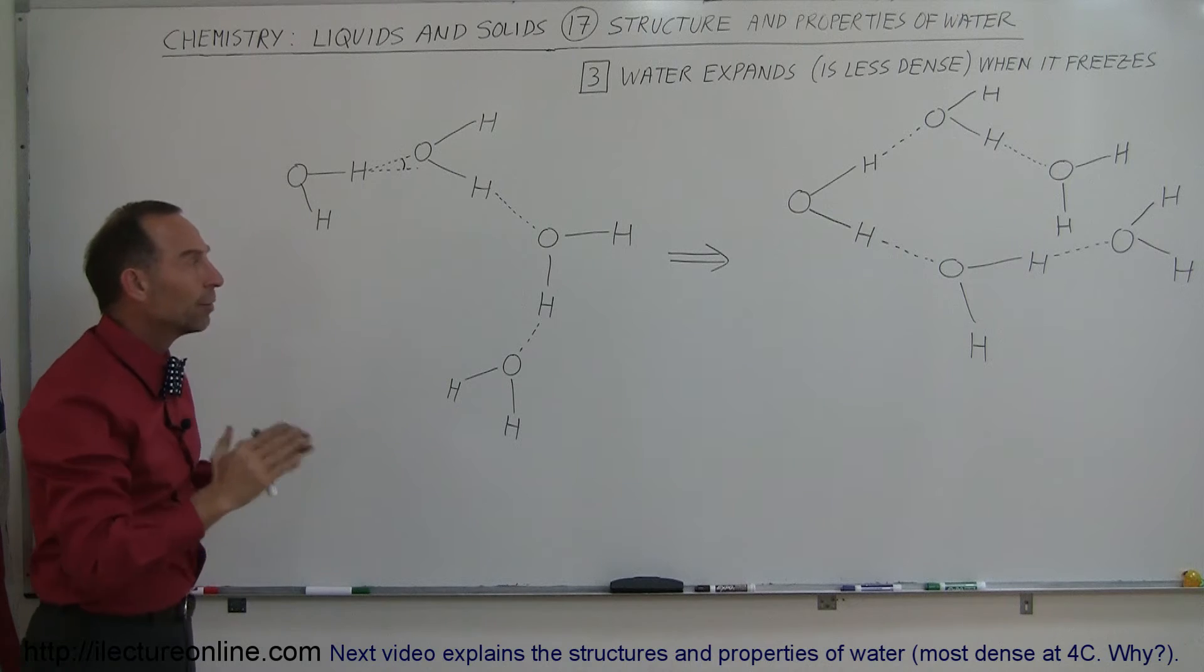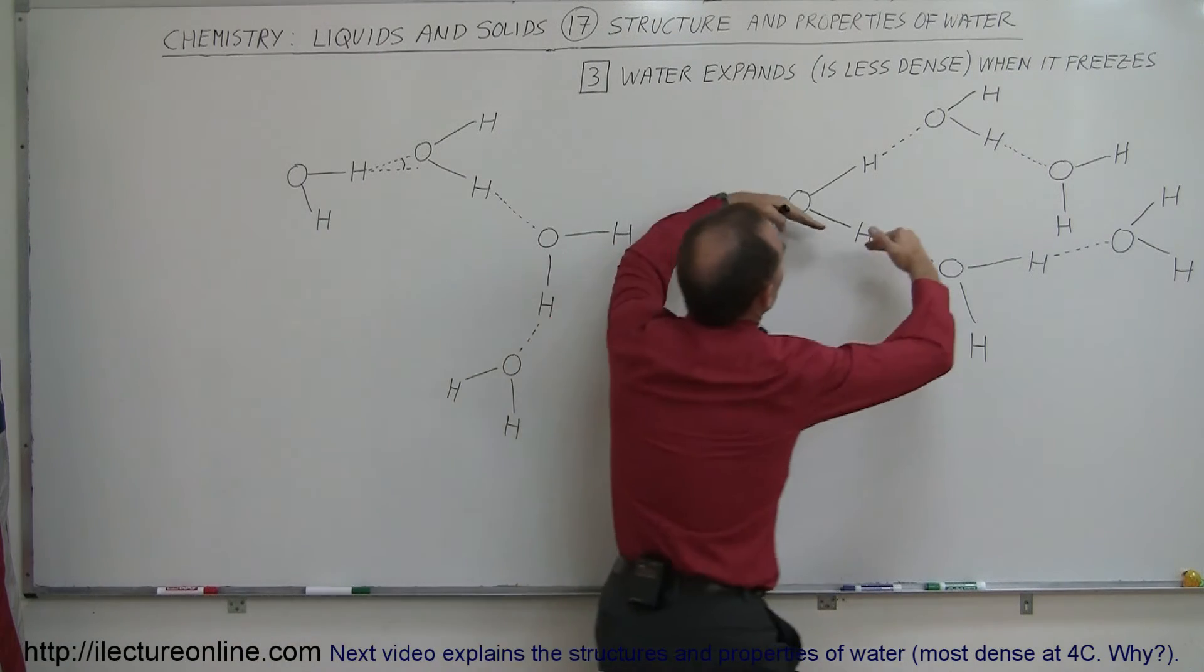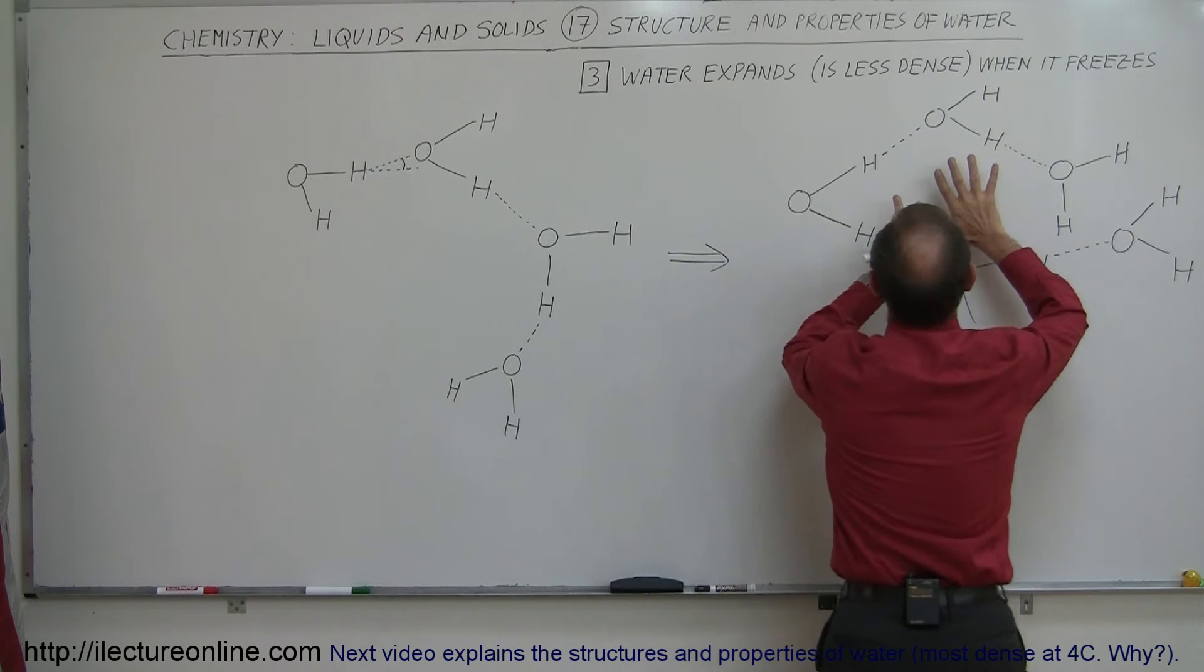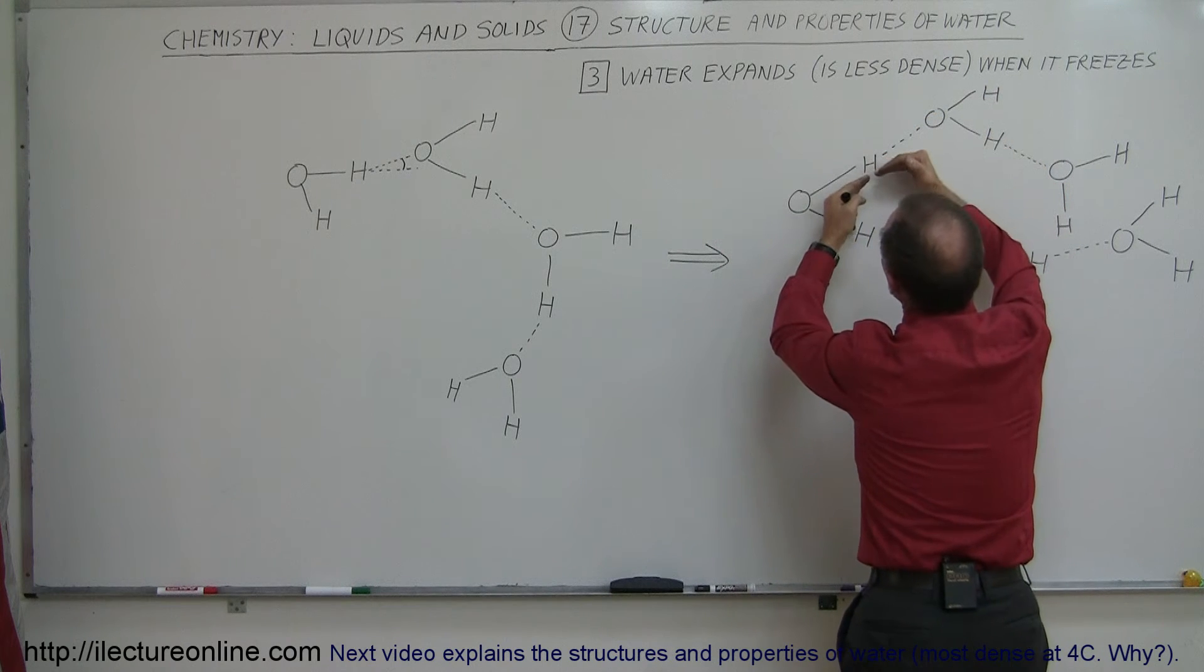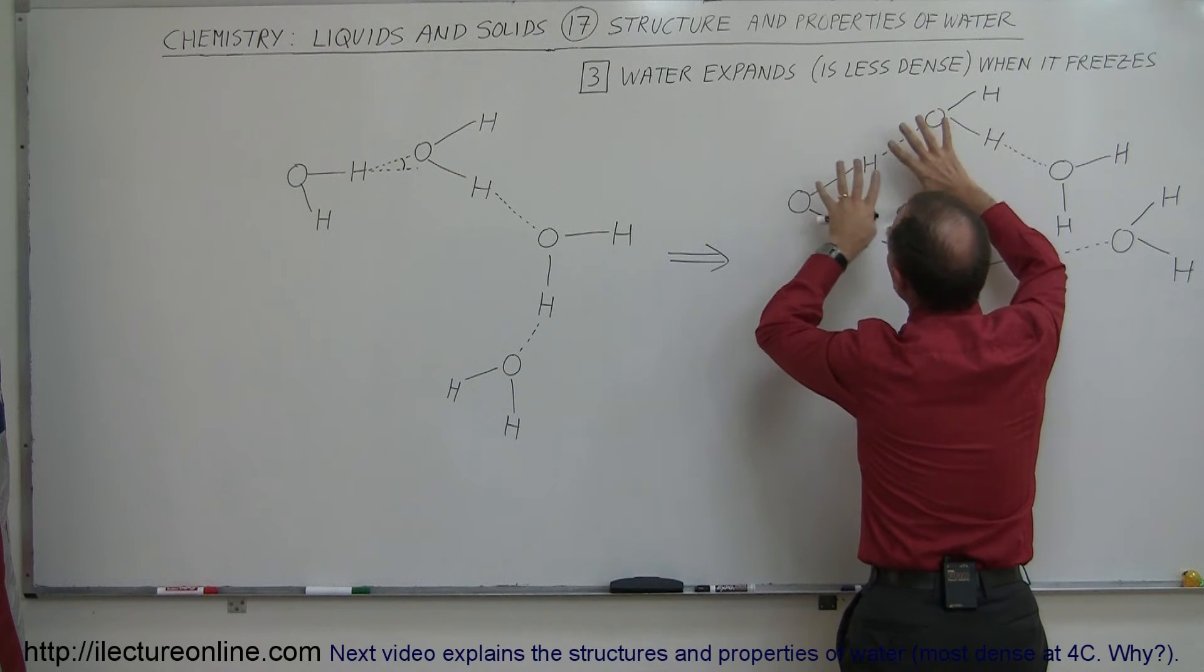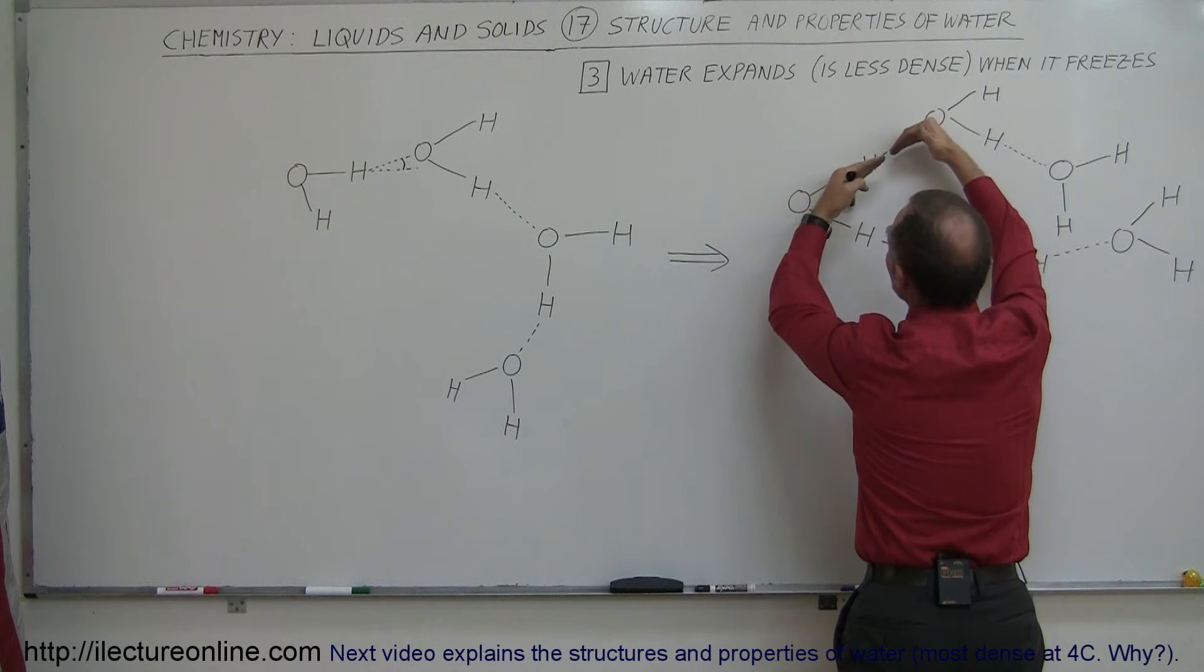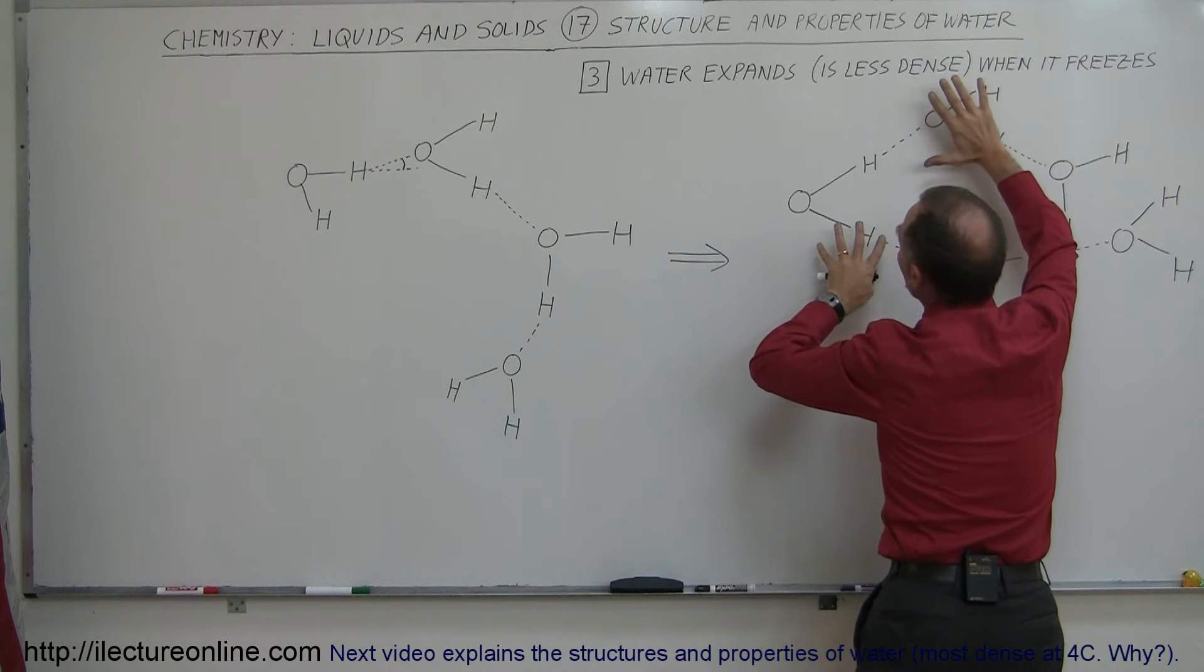When water begins to freeze, what happens to those bonds is they begin to straighten out, like here, like here, like here. This causes the molecules to be pushed farther apart, and the bonds are stronger when they're at 180 degree angles like this, therefore causing the ice to be a very strong substance with these bonds locked in like that, causing the molecules to be farther apart.